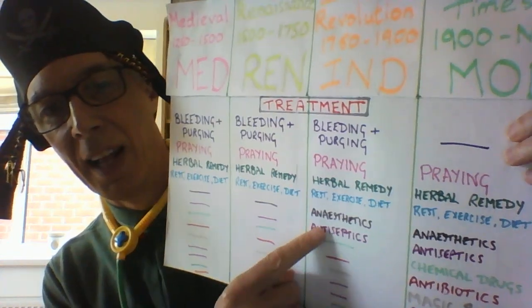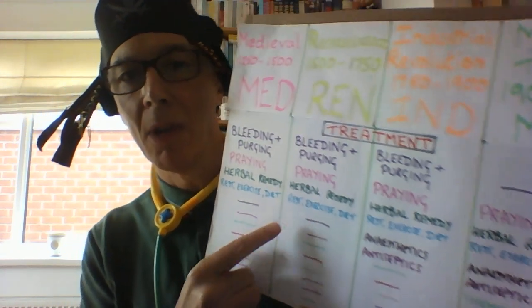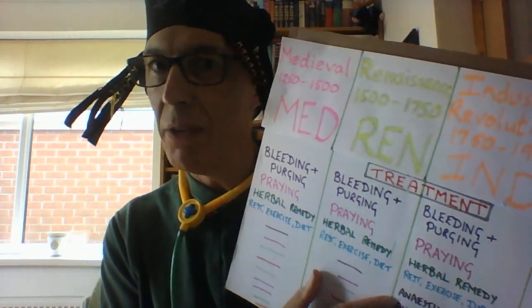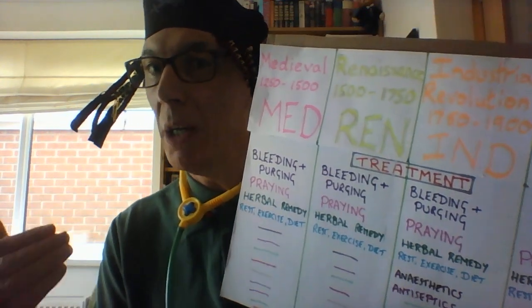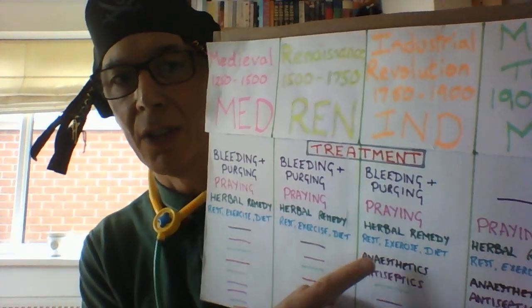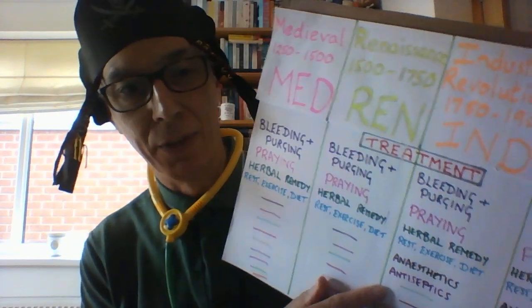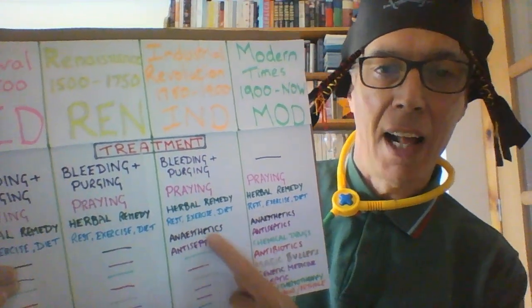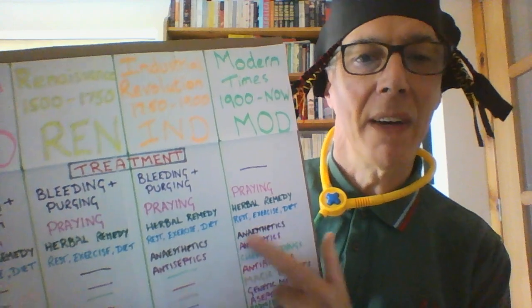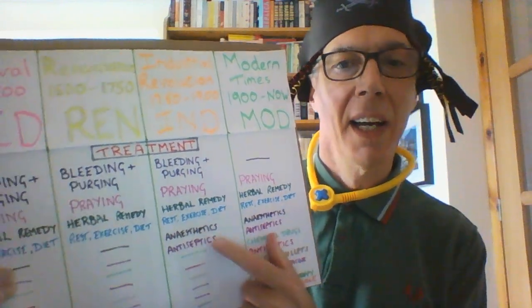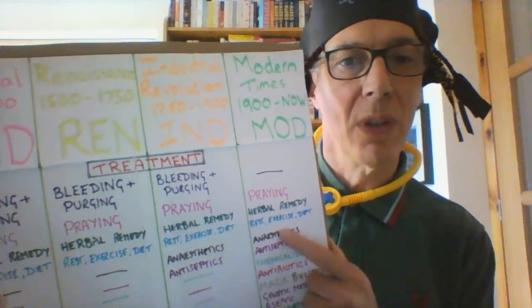And again, it's the industrial revolution that brings change. Anaesthetics and antiseptics. Back in medieval and renaissance times they did have anaesthetics, but it was herbal and not that effective. They did have some antiseptics, but again it was herbal and not that effective. In the industrial revolution we get the change to chemical anaesthetics — the first one being chloroform — and the first successful antiseptic being carbolic acid. So there we see the change. That has carried on into modern times with different chemicals, but the idea of a chemical anaesthetic and a chemical antiseptic has carried on from the industrial period into modern.